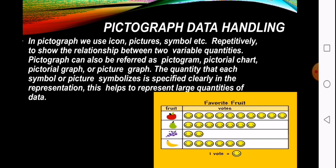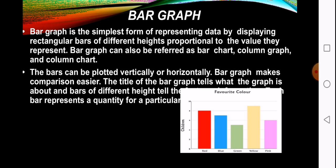Bar graph is the simplest form of representing data by displaying rectangular bars of different heights proportional to the value they represent. Bar graph can also be referred as bar chart, column graph, and column chart. The bars can be plotted vertically or horizontally. Bar graph makes comparison easier. The title of the bar graph tells what the graph is about.